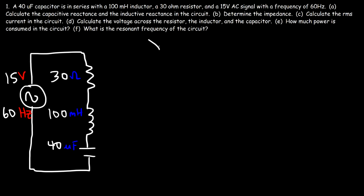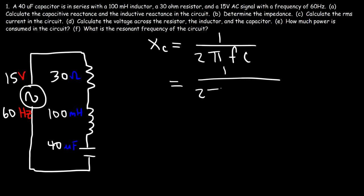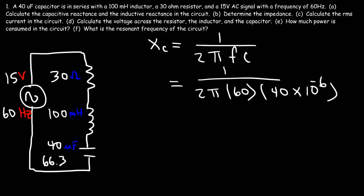Let's focus on part A: calculate the capacitive reactance. The formula for capacitive reactance is 1 divided by 2πFC, where F is the frequency, which is 60 Hz, and C is the capacitance, which is 40 microfarads or 40 times 10 to the minus 6 farads. The capacitive reactance XC is 66.3 ohms.